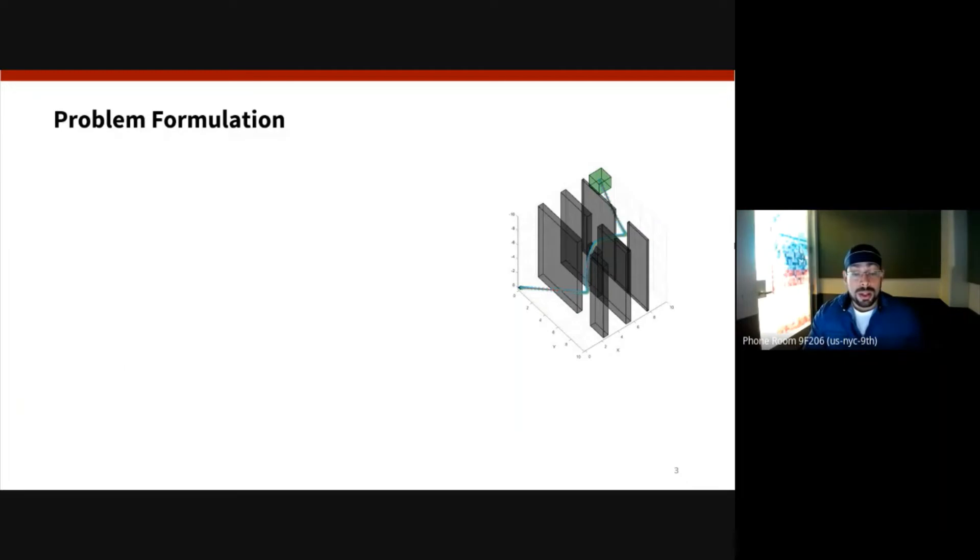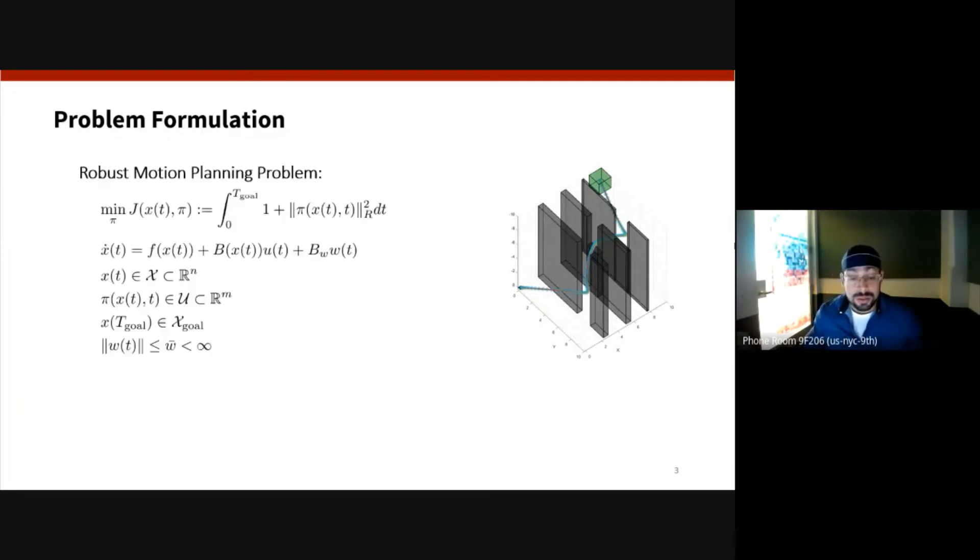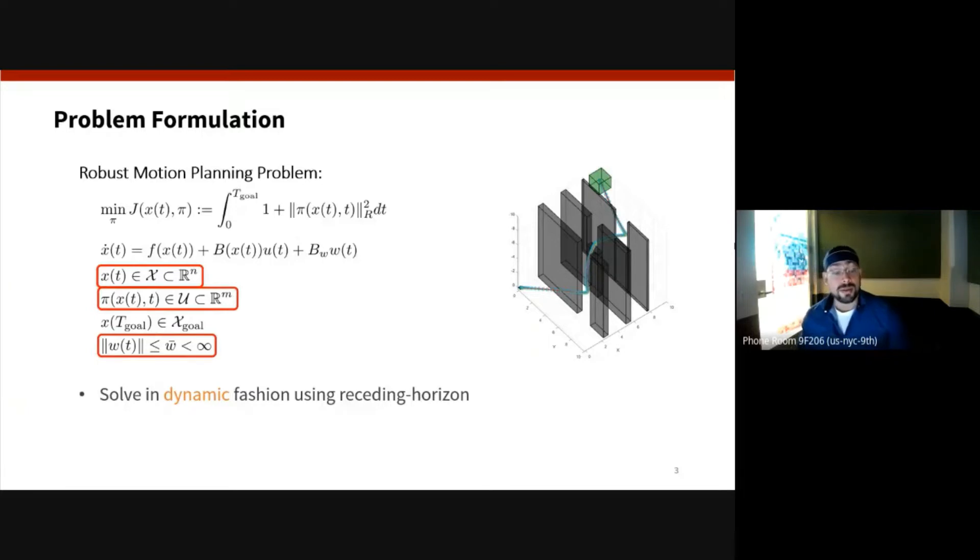We're going to formalize our problem using what is known as a robust motion planning problem. The idea here is that we're given a control-affine, nonlinear control-affine representation of our dynamics, and we want to take our robot from some initial region to a goal region and minimize some sort of cost function. In this case, for instance, the time taken to reach the goal and some penalty on the control effort.